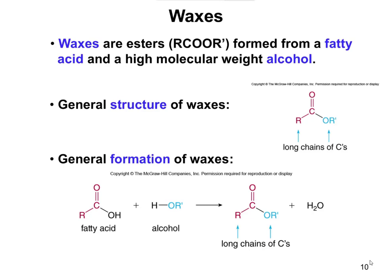The first type of hydrolyzable lipid we're going to talk about are waxes. Waxes are esters — an ester is when you have a carbon double bonded to oxygen, bonded to another oxygen with carbons on either side. The one thing that really classifies these particular molecules as waxes is that the carboxylic acid part comes from a fatty acid, a long carboxylic acid, and then an alcohol that has a high molecular weight or a long hydrocarbon part.